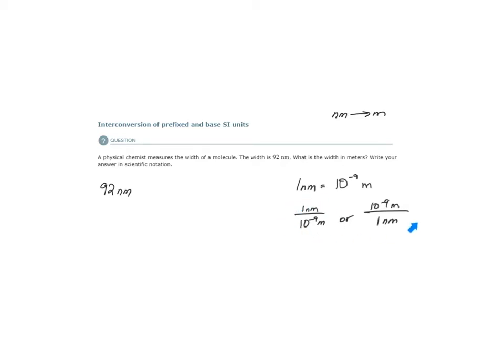But the difference between these two expressions is I use one or the other depending on what my starting units are and what my ending units need to be. In this case, my starting units are nanometers, and I need them to be meters. So in order to eliminate the units of nanometers here and to convert to meters, I need to use the expression that when I multiply 92 nanometers by it, the units of nanometers will cancel out. That expression would be this one.